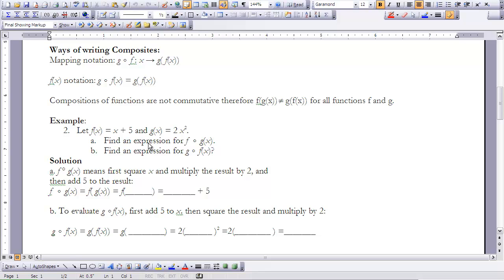We're going to find an expression for f following g of x. What that means is we start with our function g of x first, and insert that into our f of x. So f following g of x is the same as f of g of x, which is the same as f of 2x squared, because g of x is 2x squared. So that is going to be 2x squared plus 5.